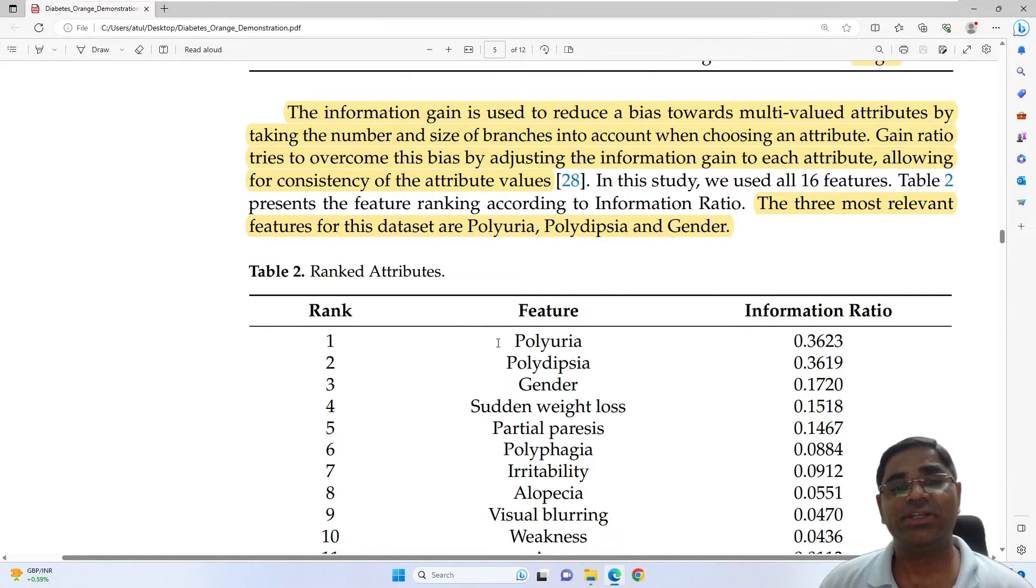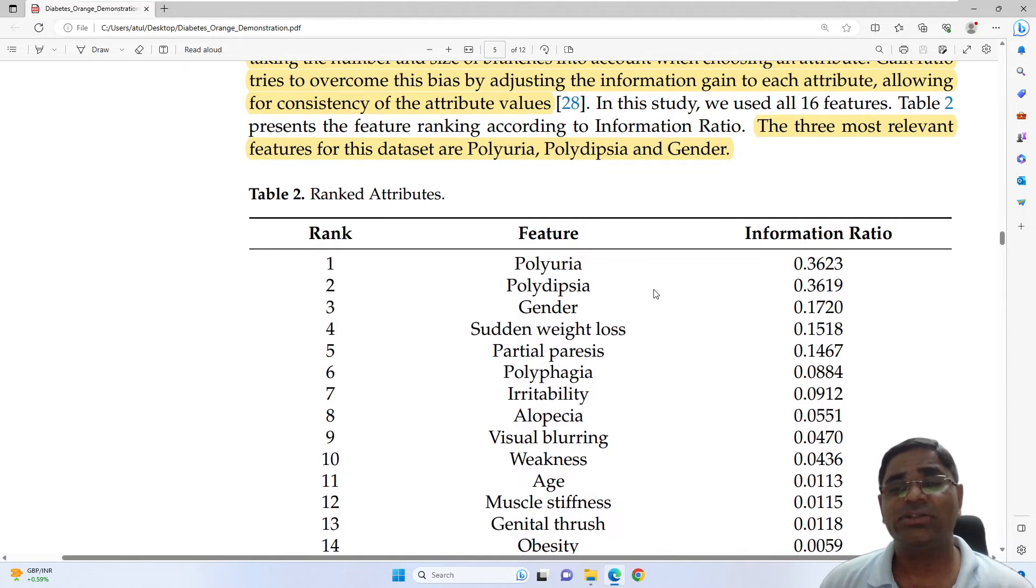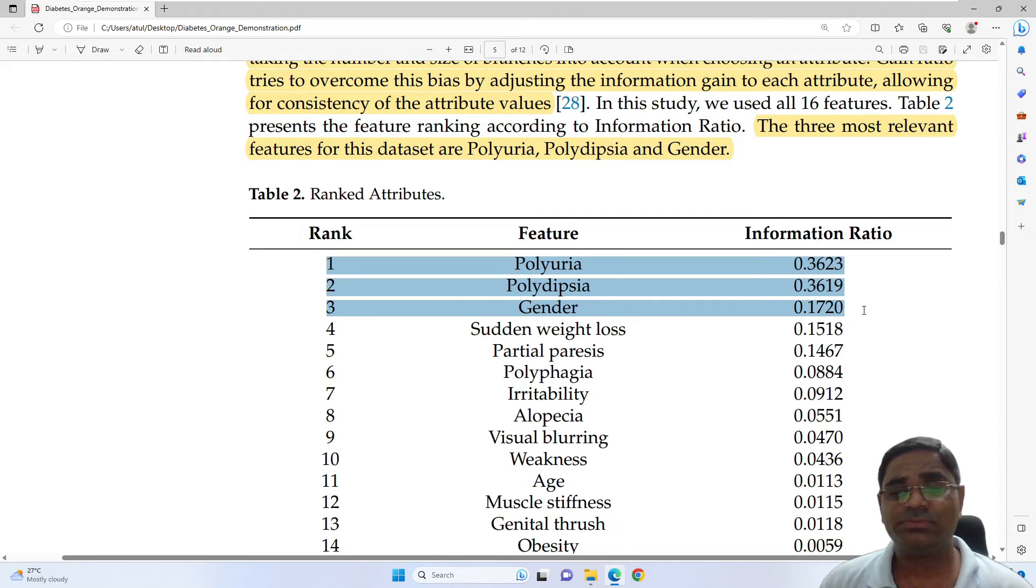The first thing that they generated from the dataset is information gain. It is used to reduce a bias towards multivalued attributes by taking the number and size of branches into account when choosing an attribute. The article suggests that three most relevant features for this dataset are polyuria, polydipsia, and gender. We can also confirm the same by looking at the information ratio provided by these three features.